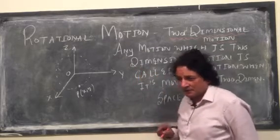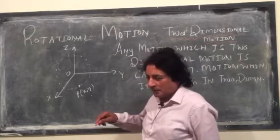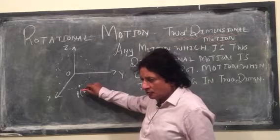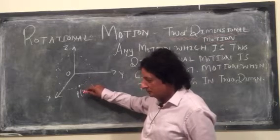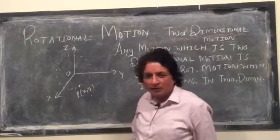If an object is moving in two-dimensional space, say in X-Y space, then it will be rotating.